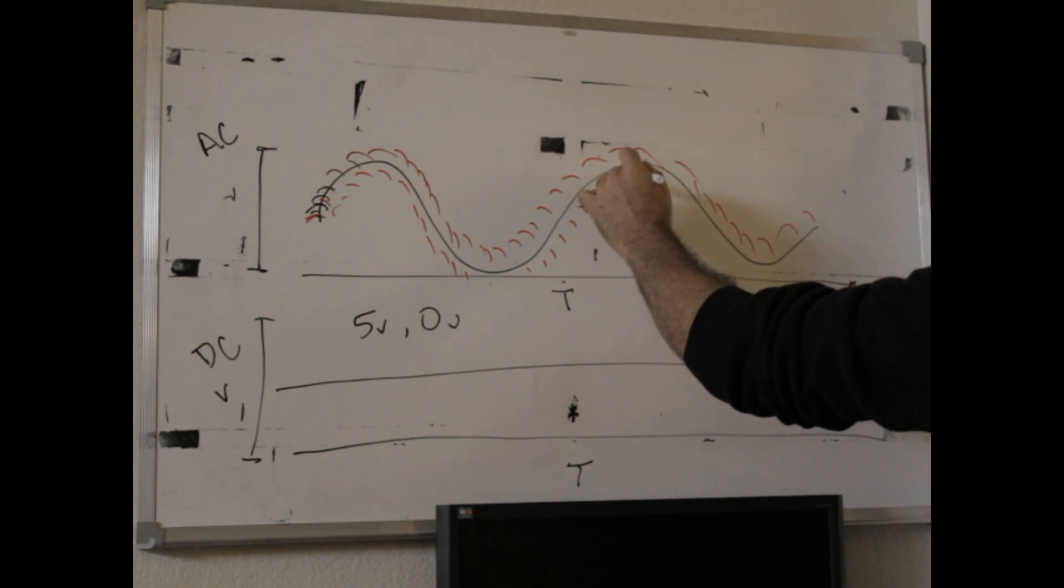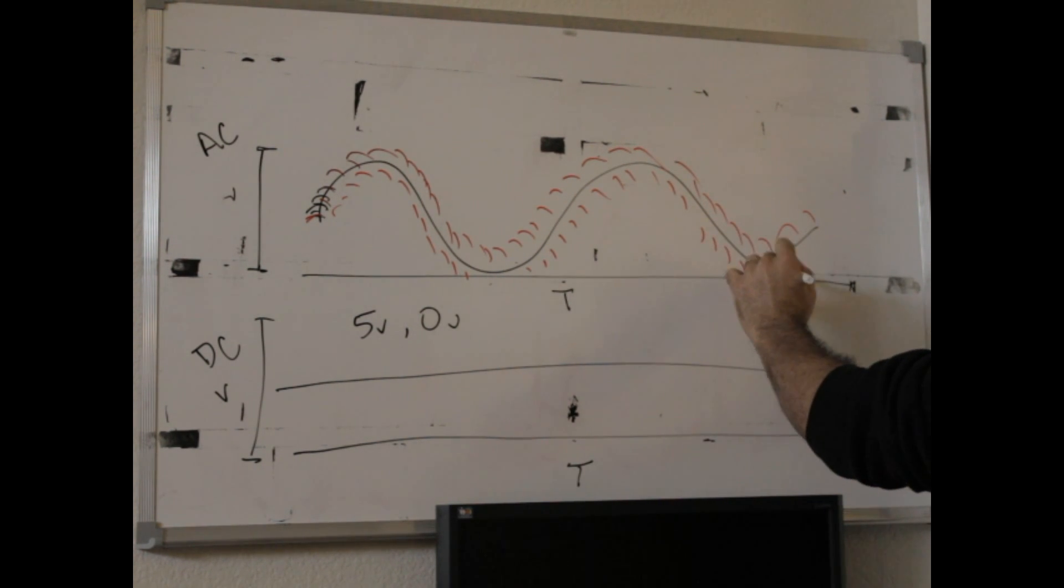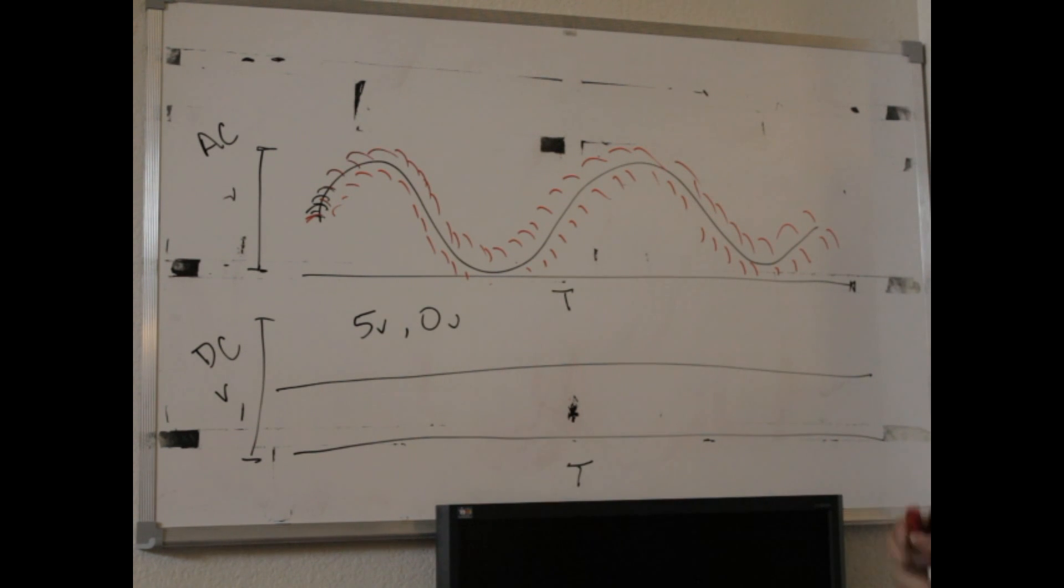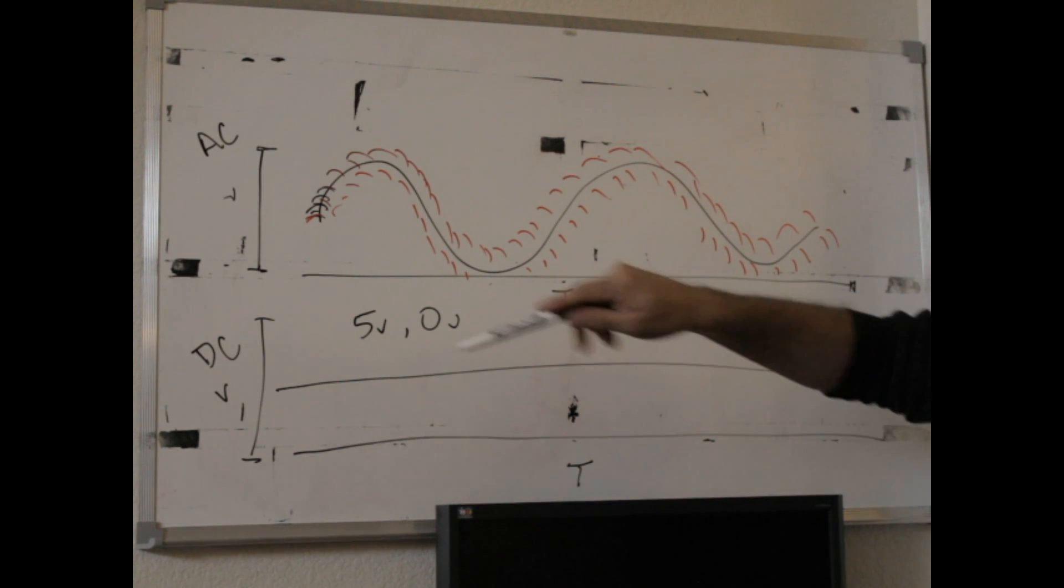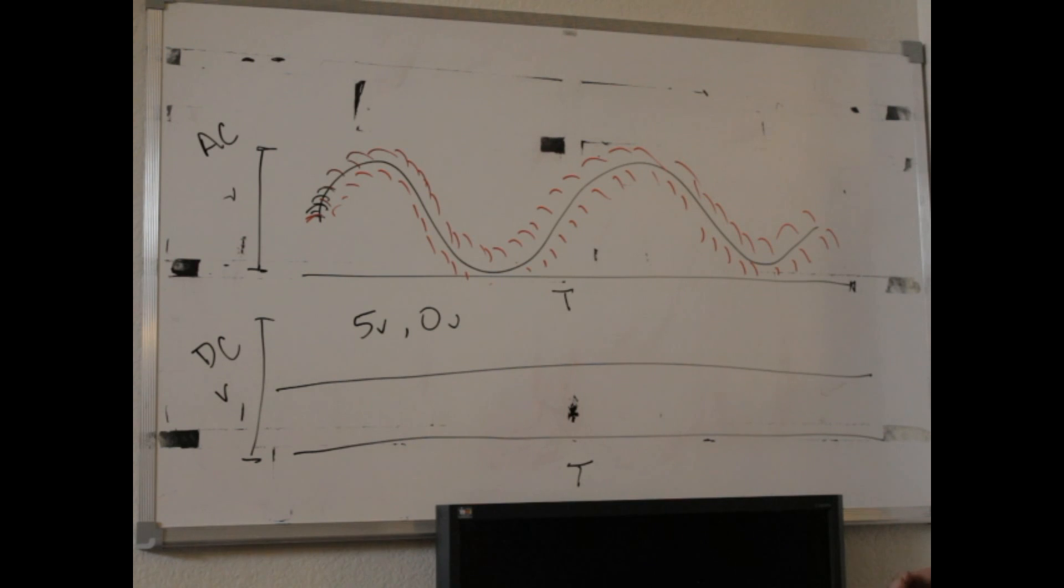If the current wasn't changing constantly, this electromagnetic field would not exist perpendicular to the E field. A magnetic field would not exist. So it's because the current is always alternating that there is an emission of this electromagnetic property.